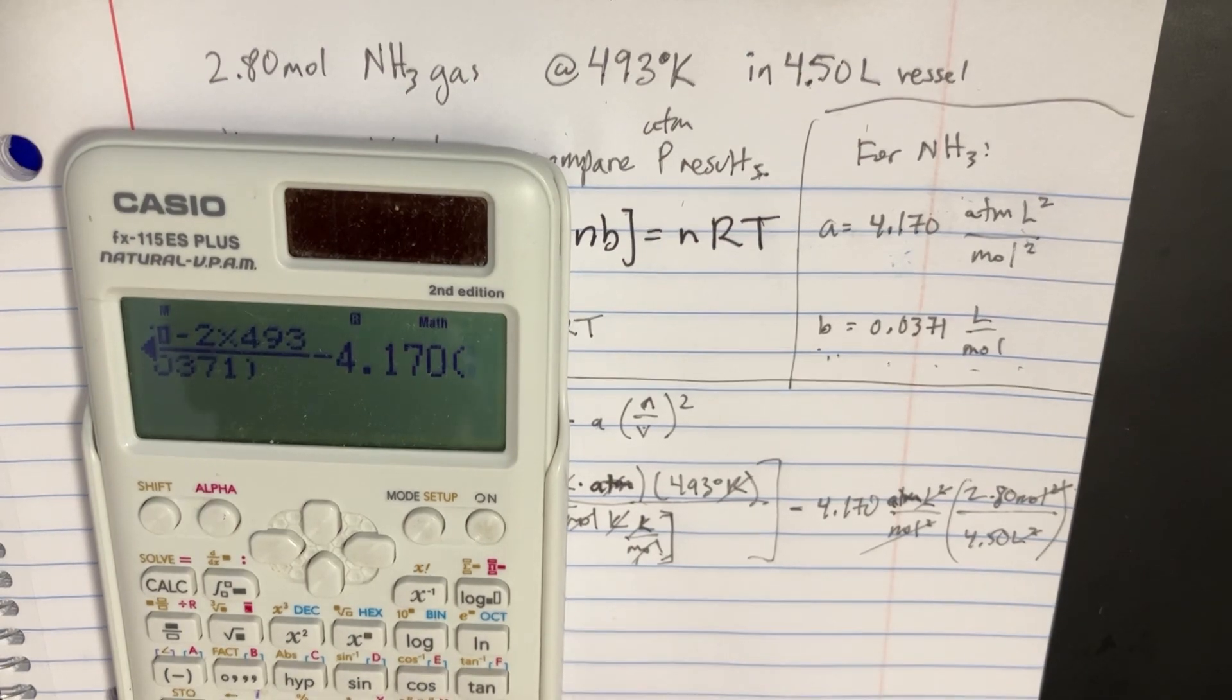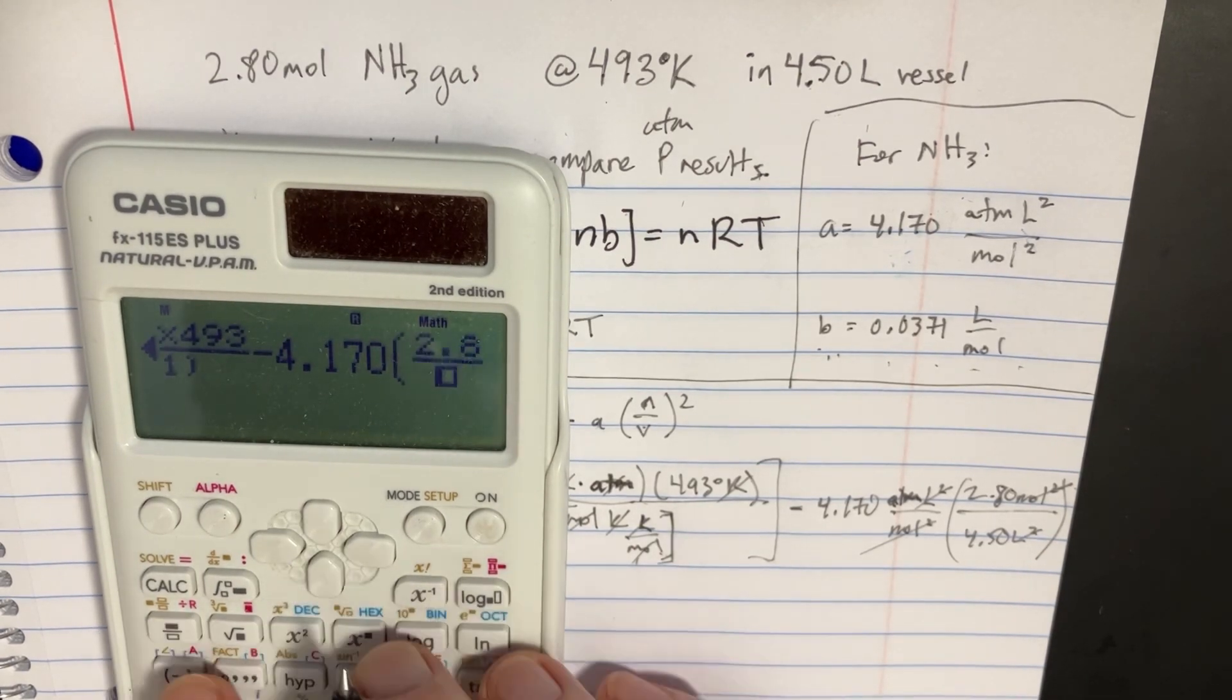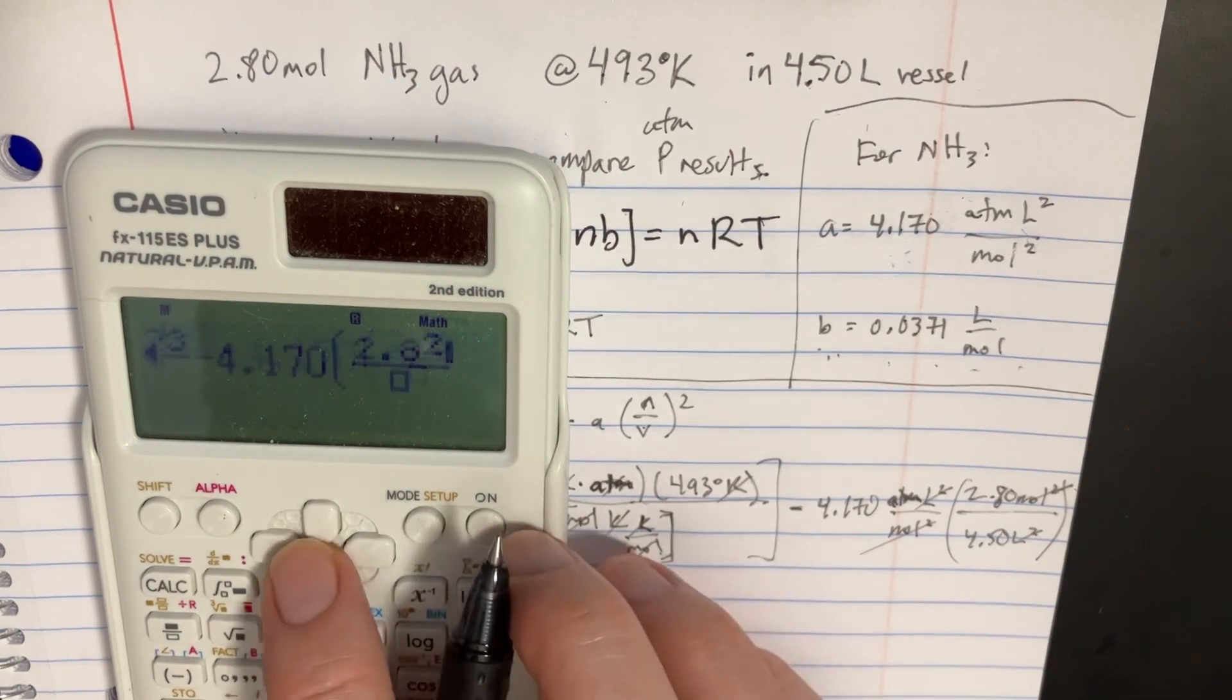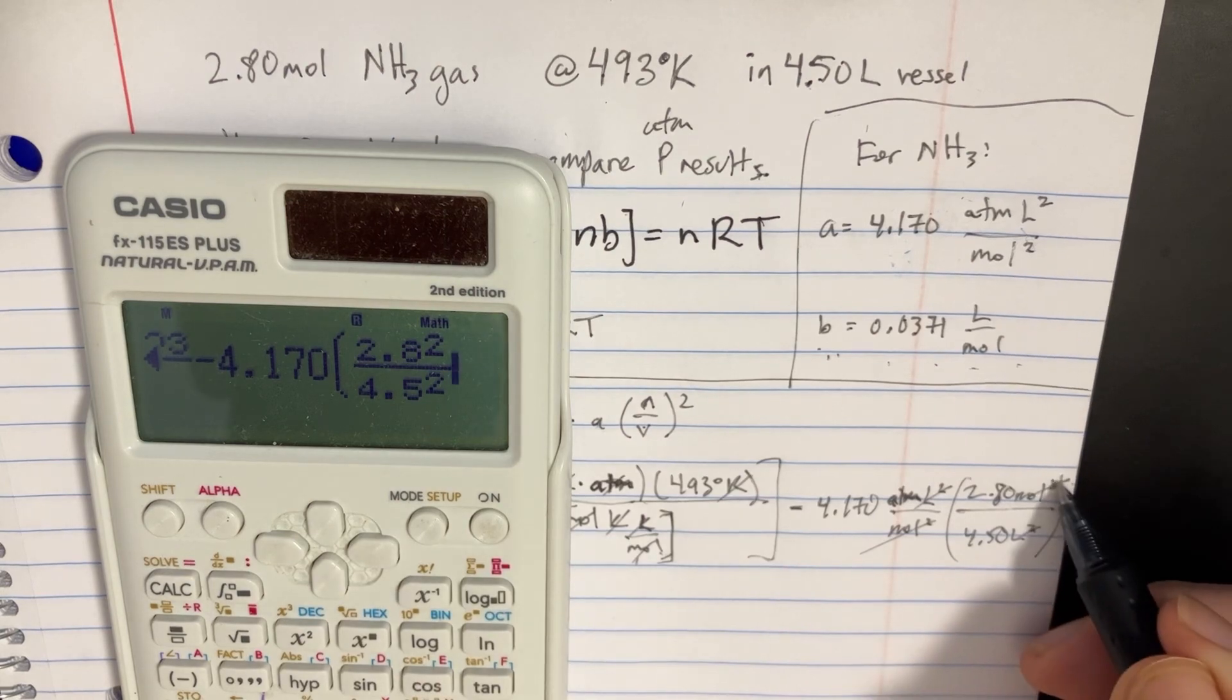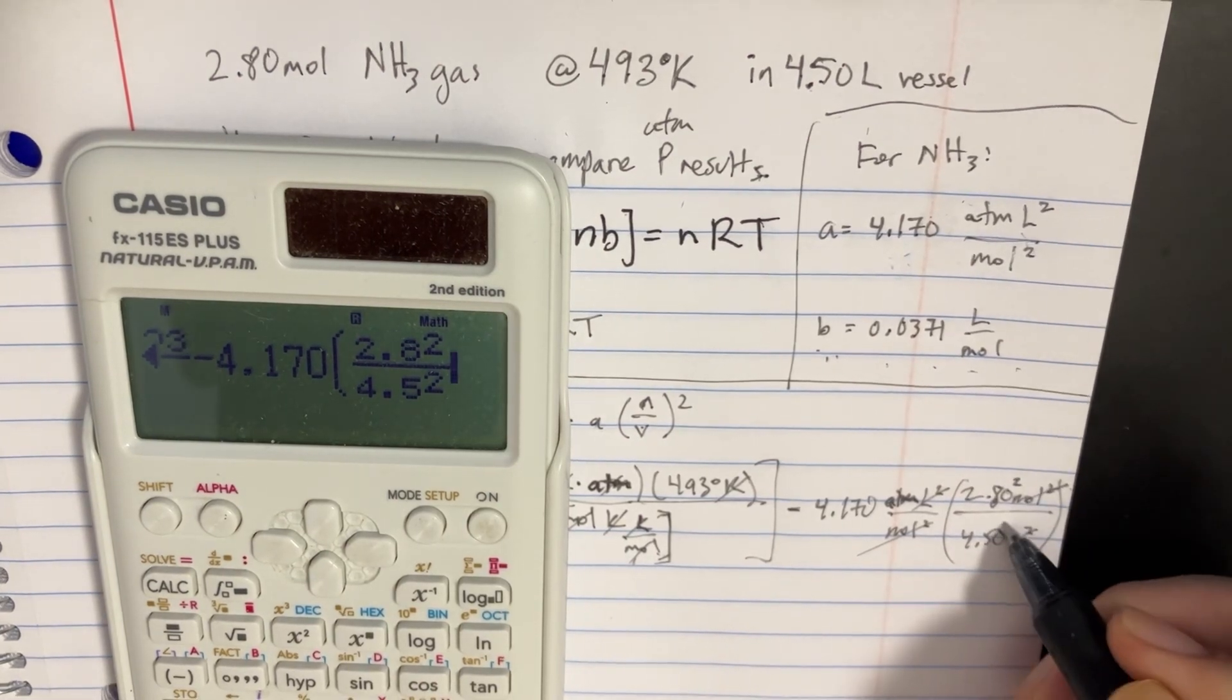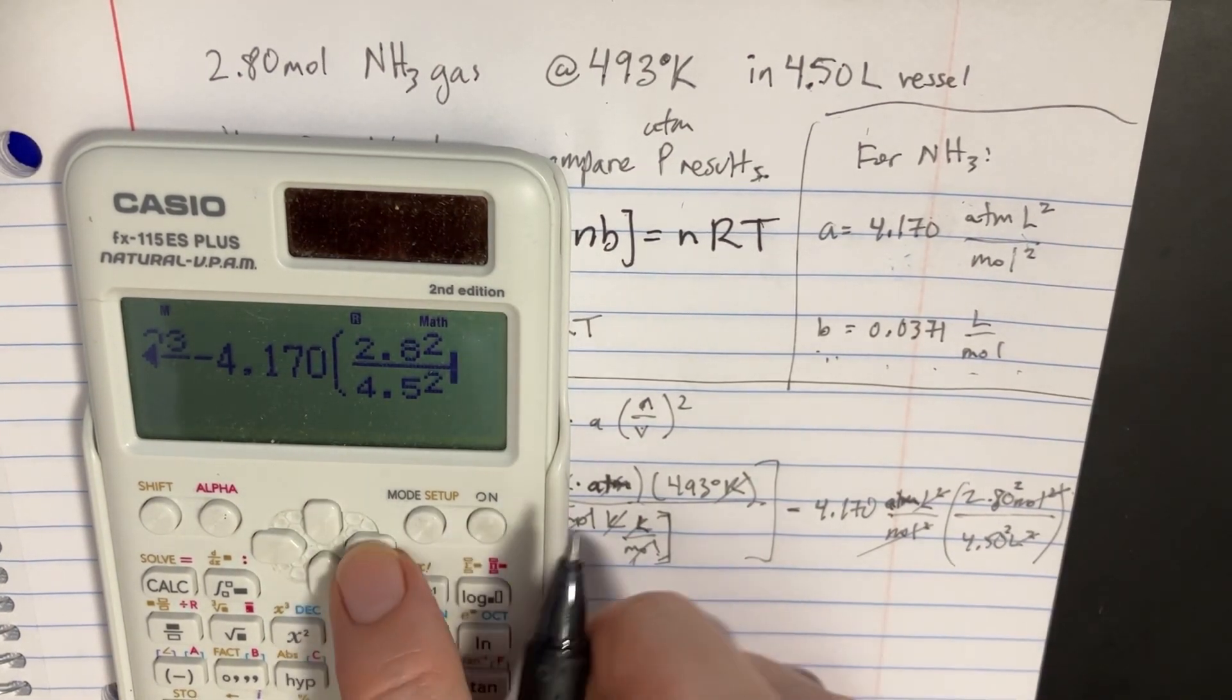And we can multiply that by 2.8 divided by, and it's actually squared here, divided by the 4.5 squared. Because yeah, the squared should also go to the number and not just the unit. Okay, good stuff.